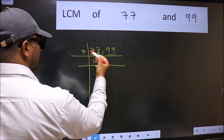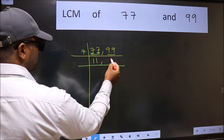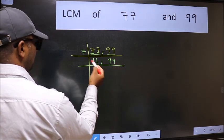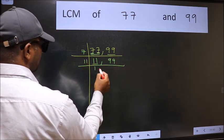The other number 99, not divisible by 7, so you write it down as it is. Now here we have 11. 11 is a prime number. So 11 times 1 is 11.